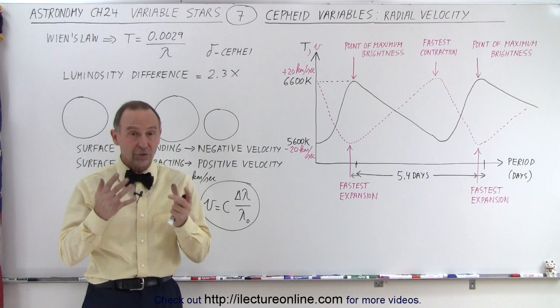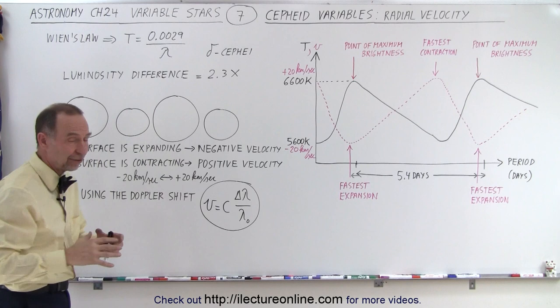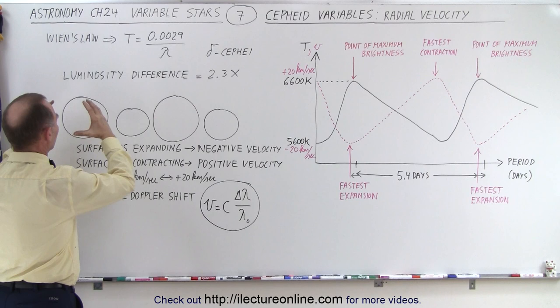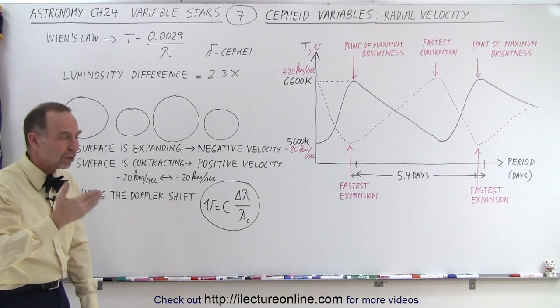It turns out, if we take a close look at the star, the Cepheid variable, in this case delta Cepheid, that's our example star again, we notice that the star actually changes size. The star grows in size and shrinks in size.